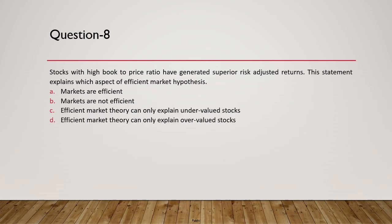Question 8: Stocks with a high book-to-price ratio have generated superior risk-adjusted returns. This statement explains which aspect of Efficient Market Hypothesis? It does not support EMH — rather, it helps us understand that markets are not always efficient, since generating higher risk-adjusted returns contradicts the hypothesis.